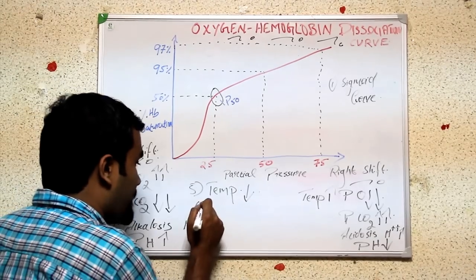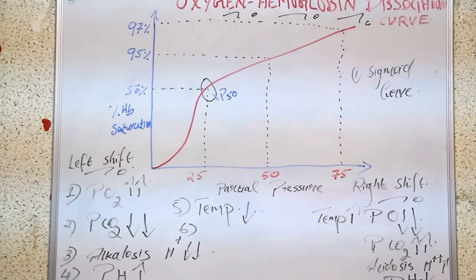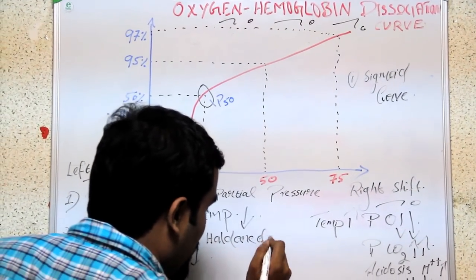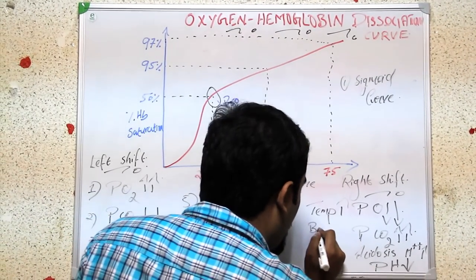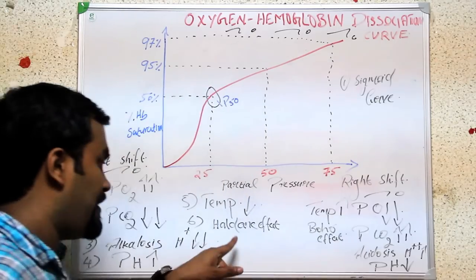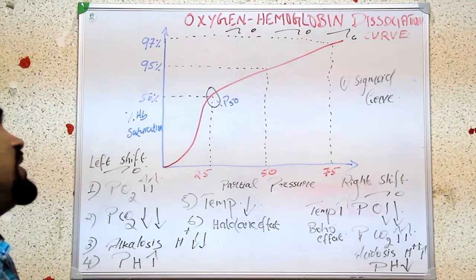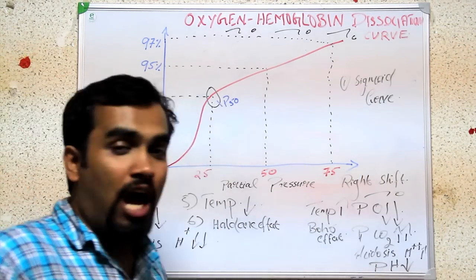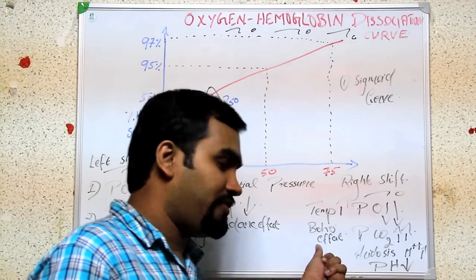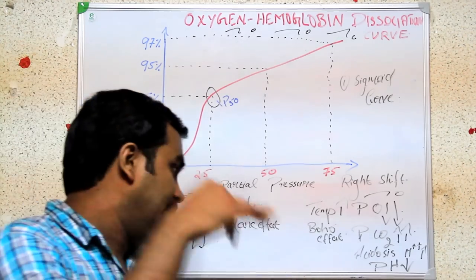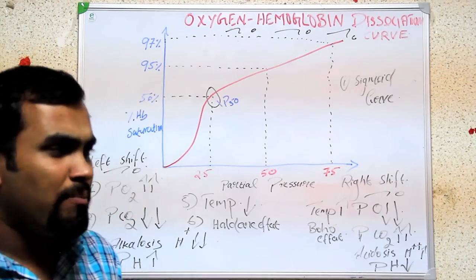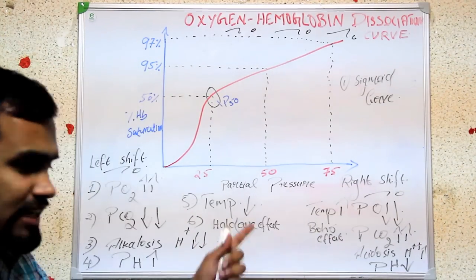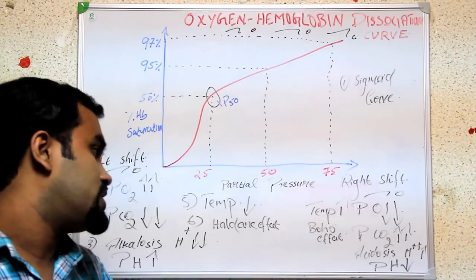There are two important effects: the Bohr effect and the Haldane effect. In left shift, we have the Haldane effect; in right shift, we have the Bohr effect. In the Haldane effect, oxygen amount is increased (left shift). In the Bohr effect, carbon dioxide is increased (right shift). To remember: 'Bohr wells' are very deep — you would suffocate inside due to more carbon dioxide — so Bohr effect means right shift. Haldane effect is like a very big heart with lots of oxygen — left shift.